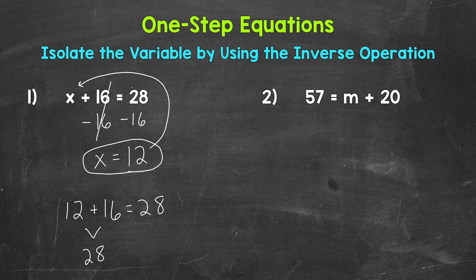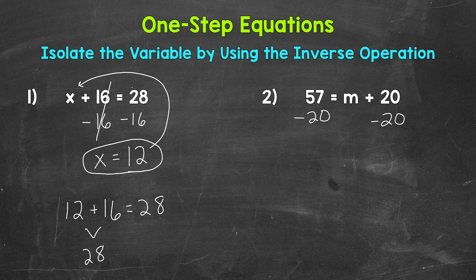Let's move on to number 2, where we have 57 equals m plus 20. We need to isolate that variable of m. 20 is being added to m, so we need to undo that addition using the inverse operation. The inverse of addition is subtraction. So let's subtract 20 from this side of the equation. Whatever we do to one side, we must do to the other, so let's subtract 20 from this side as well. On the right side of the equation, we are adding 20 and subtracting 20, so these 20s cancel out — they equal 0. We are left with our isolated variable of m.